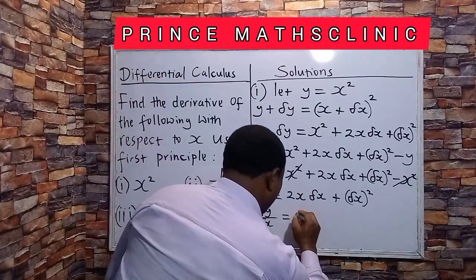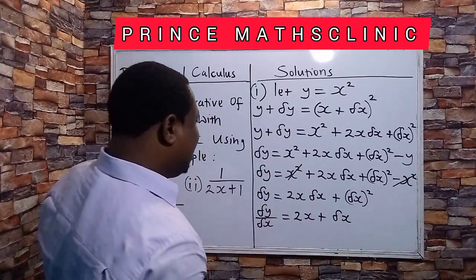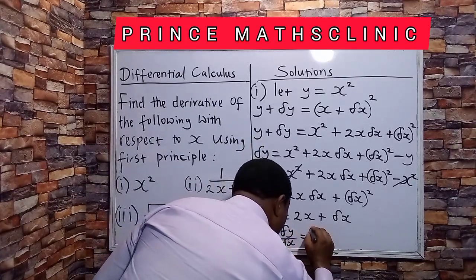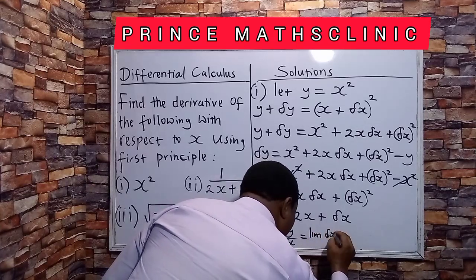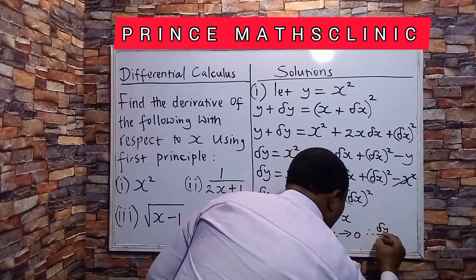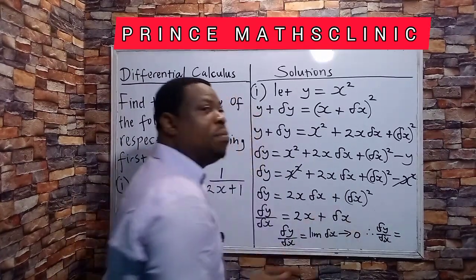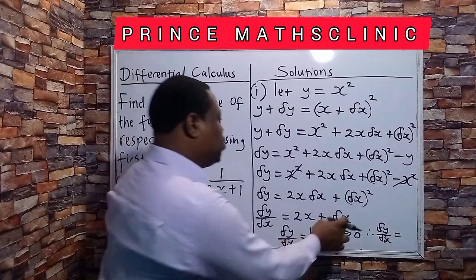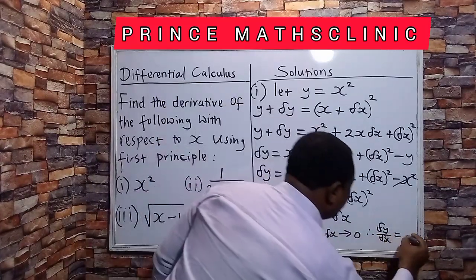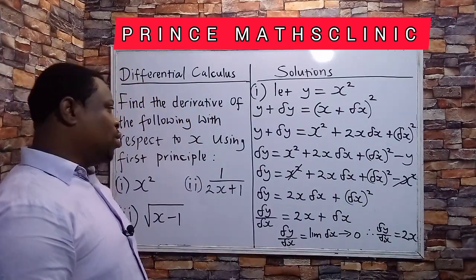So I am left with 2x plus dx. Then the next stage is to take limits — limits as dx tends to 0. Therefore dy/dx equals... dx tends to 0 means wherever you have dx, put 0 there. So once you put 0 in dx, you are left with just 2x. So therefore dy/dx becomes 2x. That is the result to this particular question.